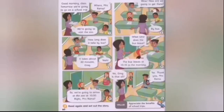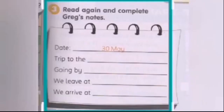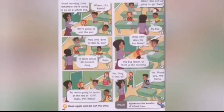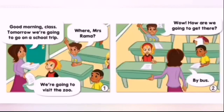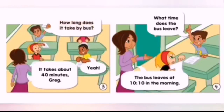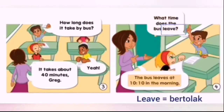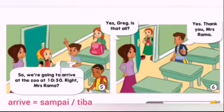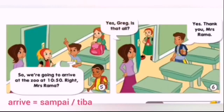We're going to read a story on page sixty and do exercises three and four on page sixty-one. Listen and read: where are the children going tomorrow? Good morning class. Tomorrow we're going to go on a school trip. Where, Mrs. Rummer? We're going to visit the zoo. How are we going to get there? By bus. How long does it take? It takes about forty minutes, Greg. What time does the bus leave? The bus leaves at ten ten in the morning. So we're going to arrive at the zoo at ten fifty. Yes, Greg. Thank you, Mrs. Rummer.